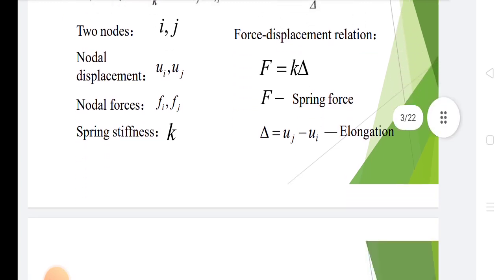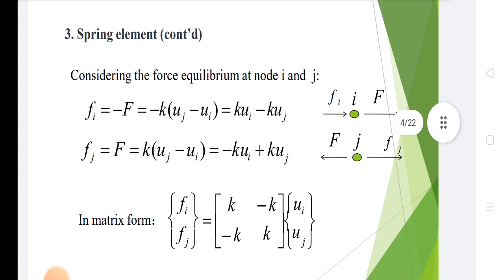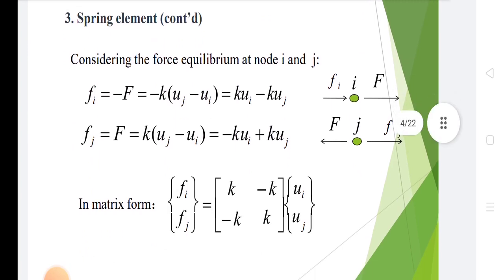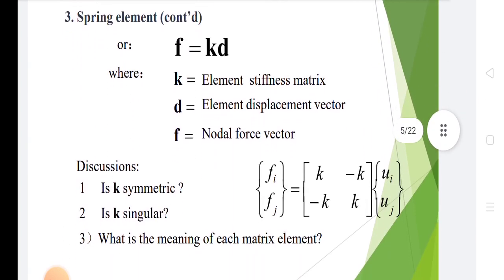Now in spring elements, considering force equilibrium at nodes i and j, in matrix form: [fi, fj] equals [k, -k; -k, k] multiplied by [ui, uj].